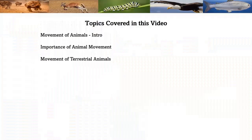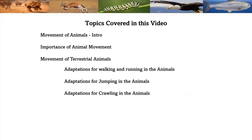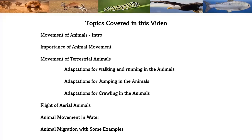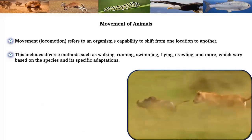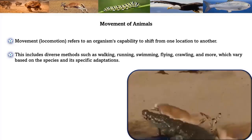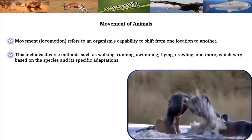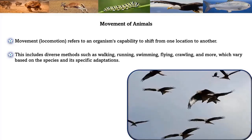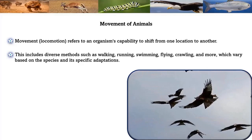Topics covered in this video: movement of animals, importance of animal movement, movement of terrestrial animals, flight of aerial animals, animal movement in water, and animal migration with some examples. Movement refers to an organism's capability to shift from one place to another. This includes diverse methods such as walking, running, swimming, flying, crawling, and more.